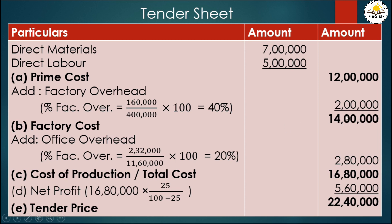In the tender sheet, factory cost is 14 lakhs, so 20 percent of 14 lakhs equals 2 lakh 80 thousand. Factory cost plus office overhead equals 16 lakh 80 thousand, which is the cost of production or total cost.